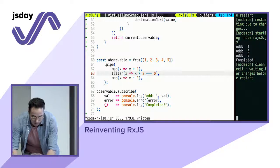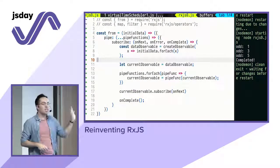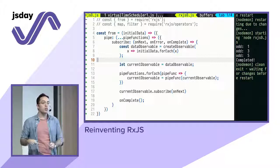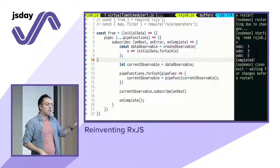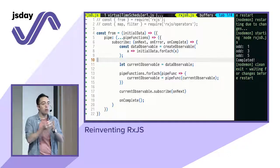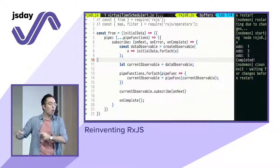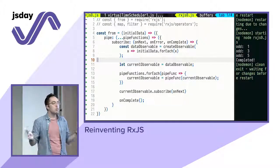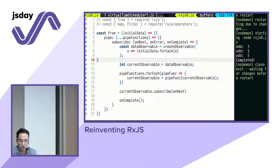To recap: we created a bit of boilerplate to match the RxJS API shape, then created an abstraction for creating observables which I used with my initial data, and built a common interface — an object with a `.subscribe` method — that allows chaining of operators. At the end I call `currentObservable.subscribe` with the next value. That's how we can reinvent RxJS from nothing.